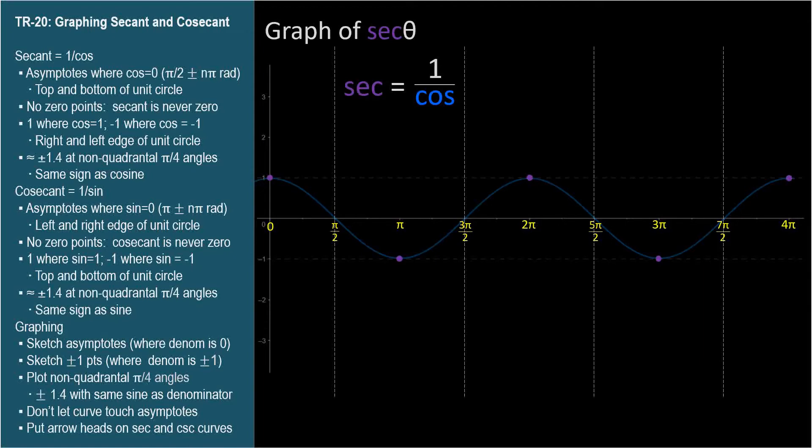For secant, we have an asymptote at pi over 2 radians. So let's imagine an acute angle, so quadrant 1, approaching pi over 2. The cosine will get smaller and smaller, so the secant will get larger and larger. Arrow here. And on the other side of pi over 2, in quadrant 2, the cosine is negative and gets very, very tiny as theta approaches pi over 2. So down arrow here.